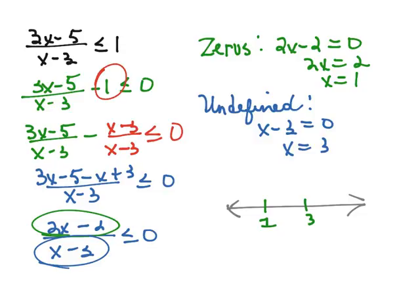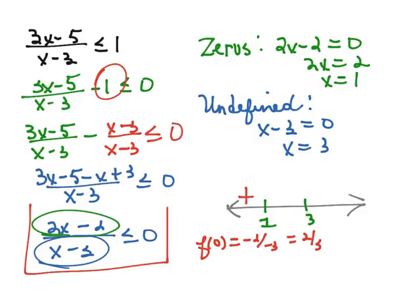So let's choose a number in each interval to see if it's positive or negative. If we choose a number smaller than 1, say 0, f of 0 would be a negative 2 divided by negative 3 which is equal to 2 thirds. And so that's positive. Again, I'm plugging them into this simplified rational expression.